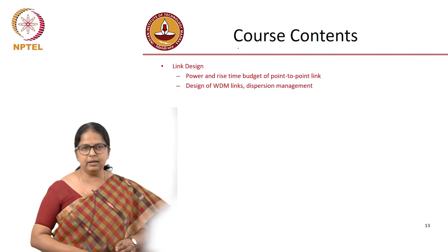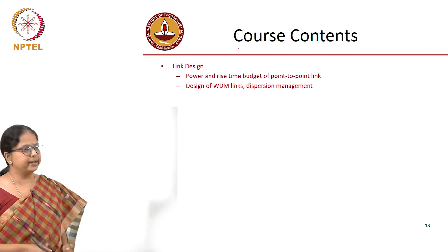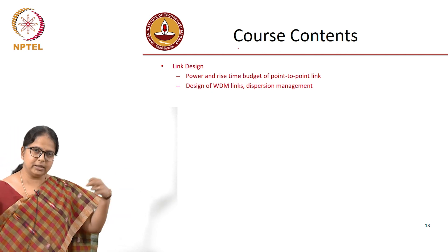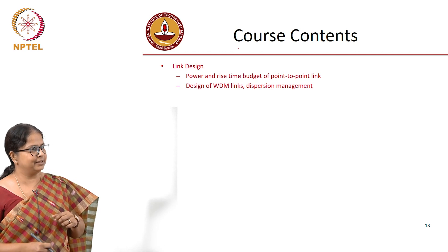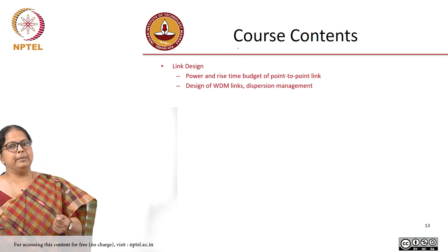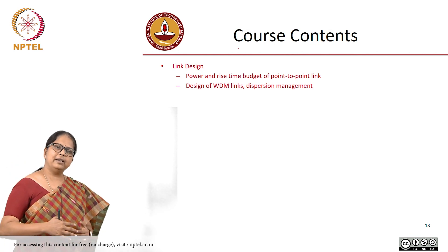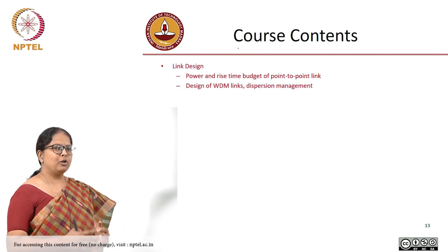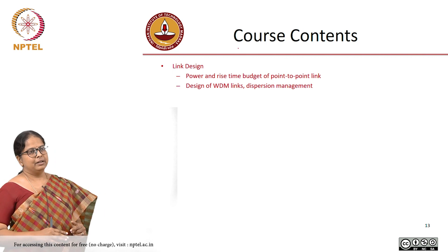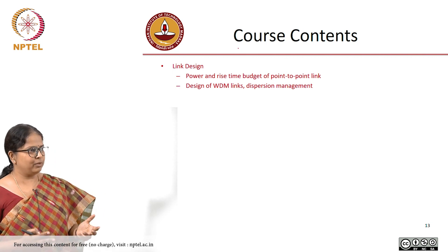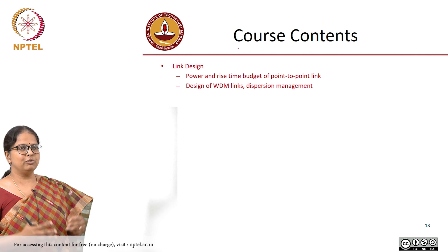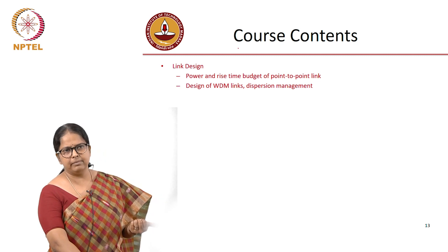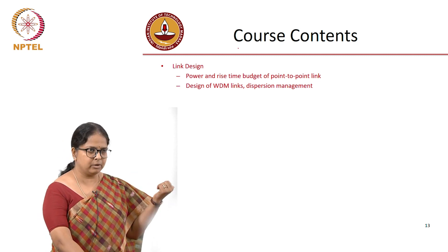Once you have all the tools, you will next do a link design — a point-to-point link. Depending on the distances, you will optimize the ingredients: pick the right laser and the right receiver so the link is optimal. You do not always have to design for the largest bandwidth — you also have to design for the least cost. This is a technology course, so you are also worried about cost and energy in addition to optimizing performance. We will also talk about WDM links and dispersion management in WDM links.